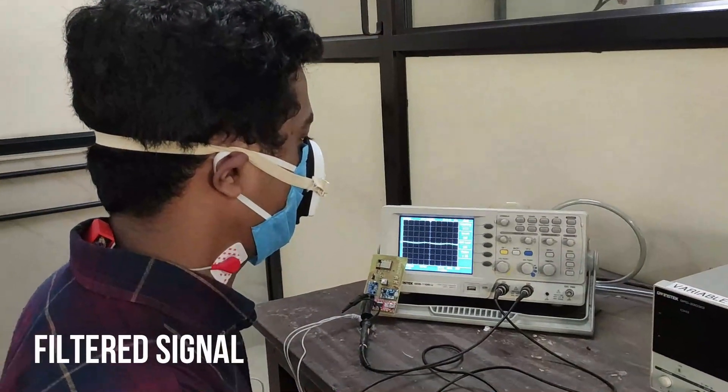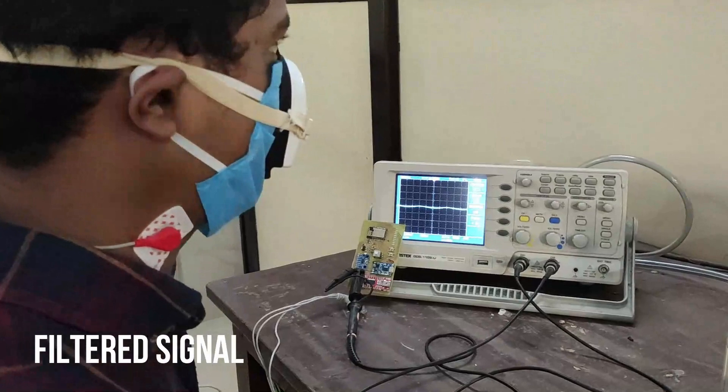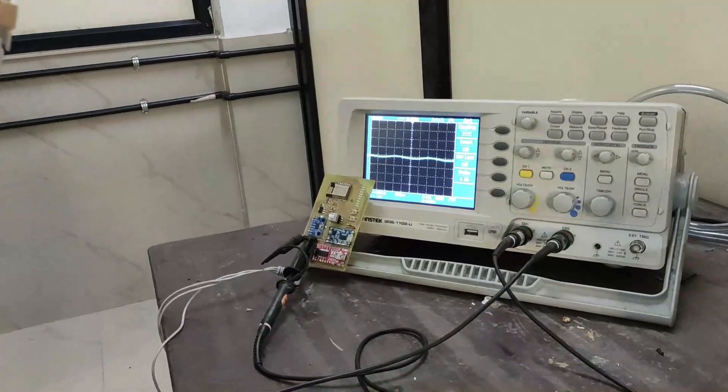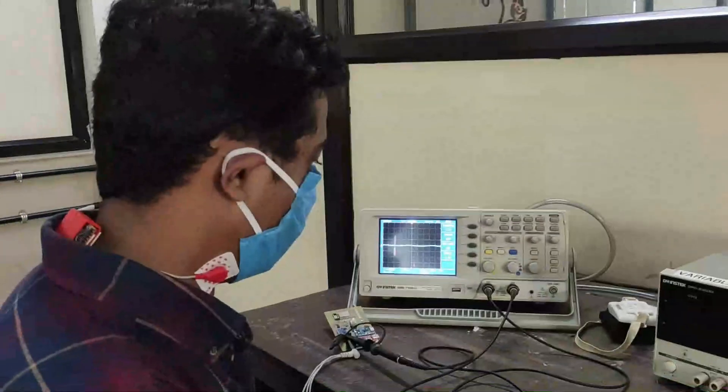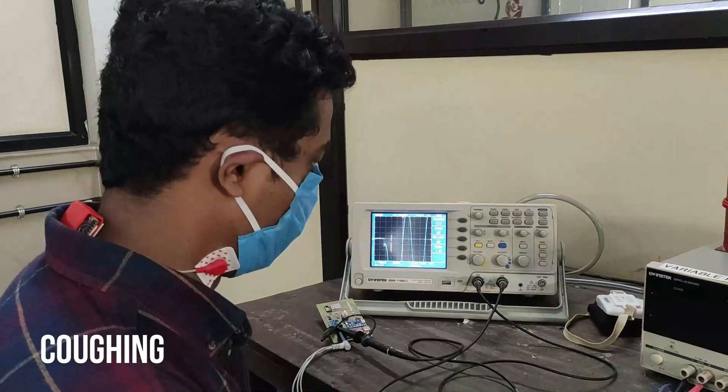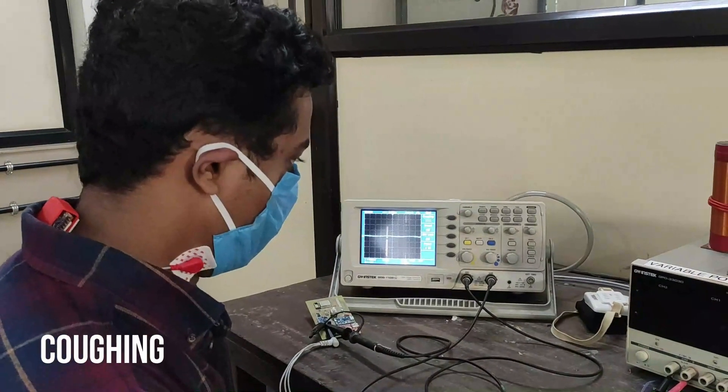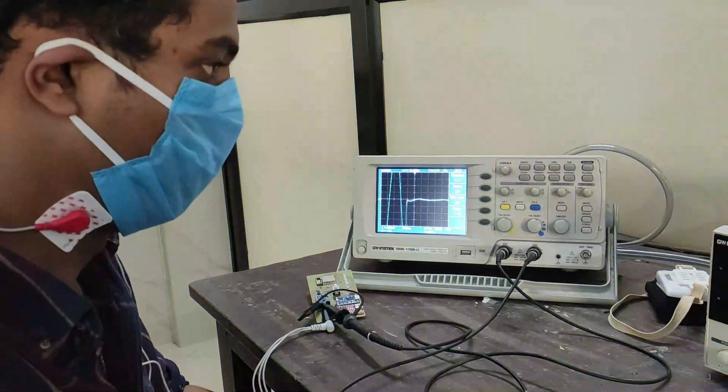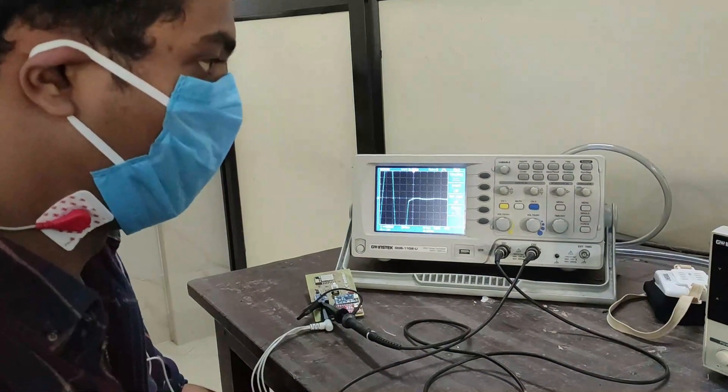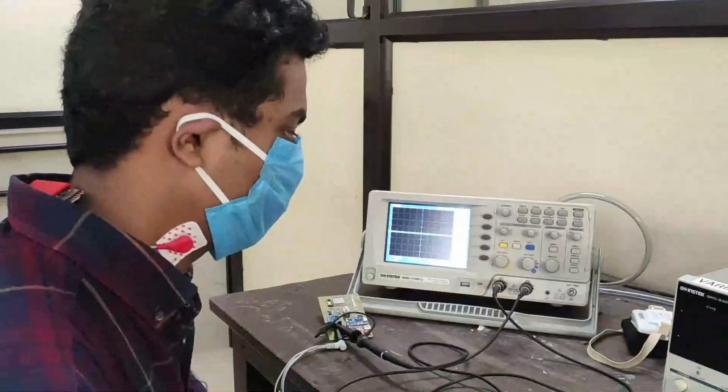Details regarding respiratory rate, coughing, sneezing, etc., are coming through surface electrodes using filtering mechanisms to separate them from normal activities. Filtered output is shown here, such as when a person coughs or when uneasy breaths are taken.